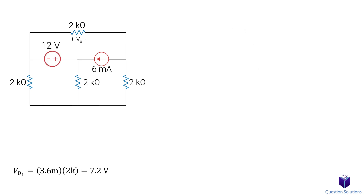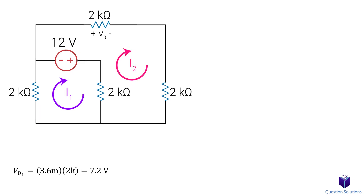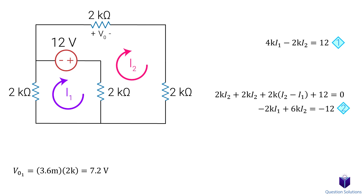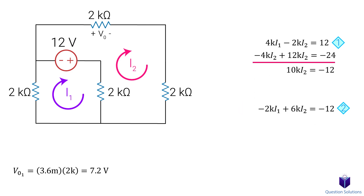Now we put the voltage source back and remove the current source. To figure out V0, we can use mesh analysis. Both will go clockwise. Let's write our first equation for current I1, then simplify — that's our first equation. Next, we can write another equation for mesh current I2, and simplify — that's our second equation. Now we can use elimination to solve for I2. Let's multiply equation 2 by 2 and then add it to our first equation. We get negative 1.2 milliamps. So mesh current 2 flows counterclockwise.